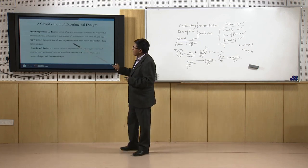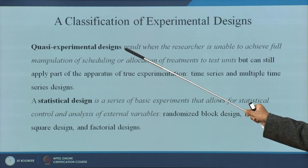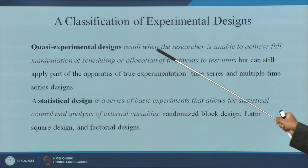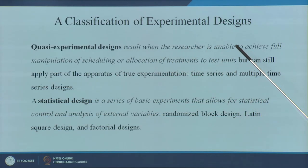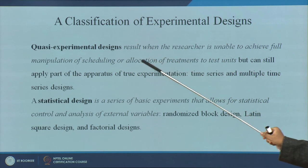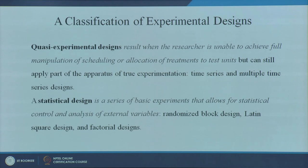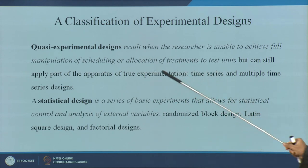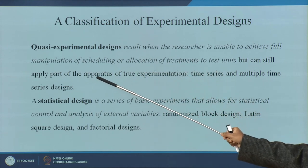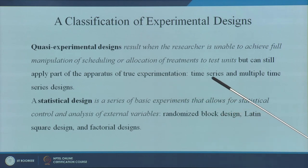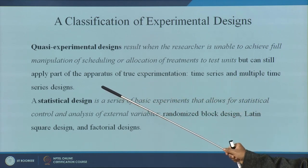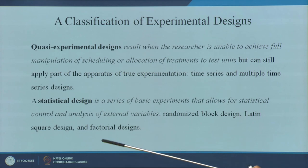Quasi-experimental designs are the third type, where the researcher is unable to achieve full manipulation of scheduling — complete randomization may not be possible — but can still apply part of the apparatus of true experimentation. Time series and multiple time series designs come into this category.